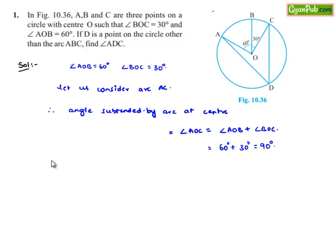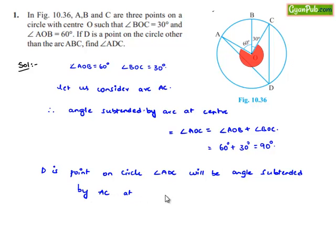Now as D is a point on the circle, angle ADC will be the angle subtended by arc AC at a point on the circle.